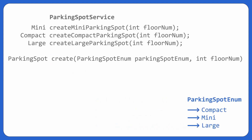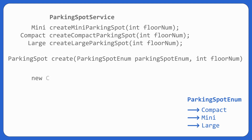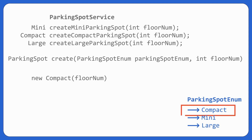Looking at what we're doing — we check if the enum is compact, then create a new compact parking spot passing in the floor number. What if we have a mapper that tells us: given this enum, create an object of this class? If we have compact enum, create object of compact parking spot, and same for the other two. We can have that sort of mapper.